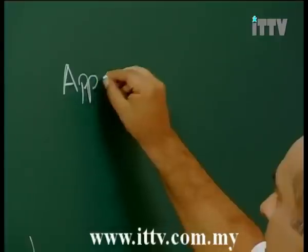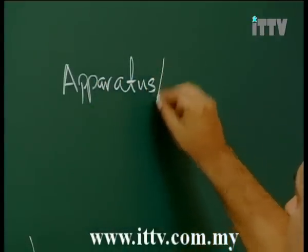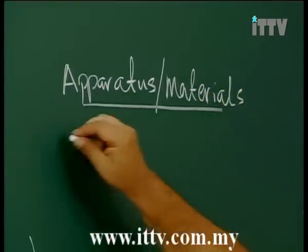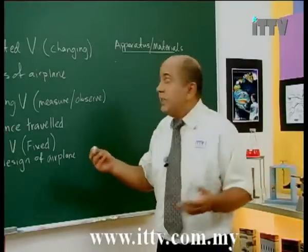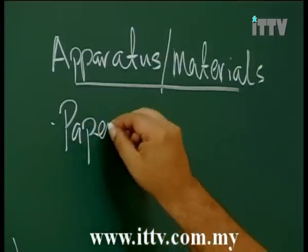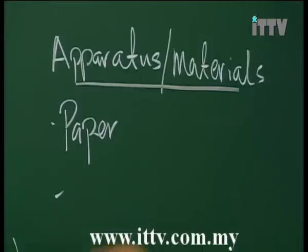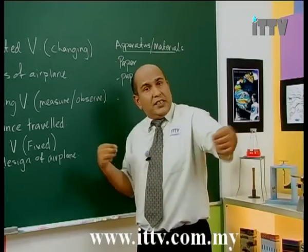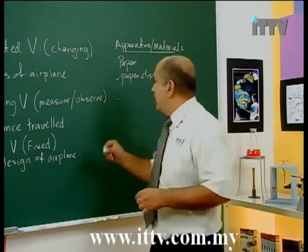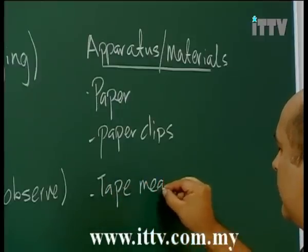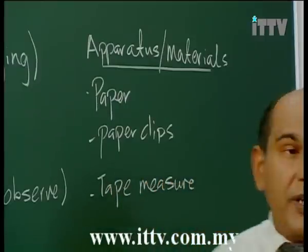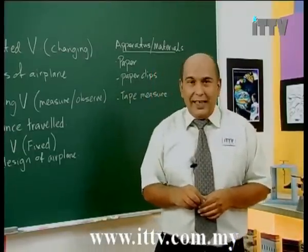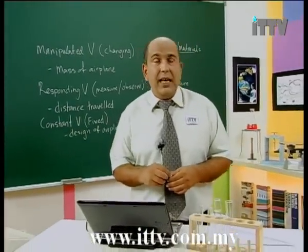So let's list out our apparatus and materials. In this case, we obviously need paper to make the plane, we need paper clips which are going to add our mass, and we need a tape measure to measure the distance the plane flies. So we need paper, paper clips, and a tape measure.